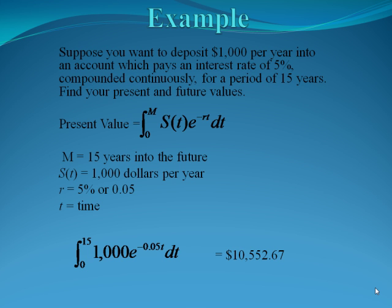By plugging all these numbers into our integral, we have the integral from 0 to 15, 1000 e to the negative .05t dt. When we put this all into our calculator, we get that our present value is $10,552.67.